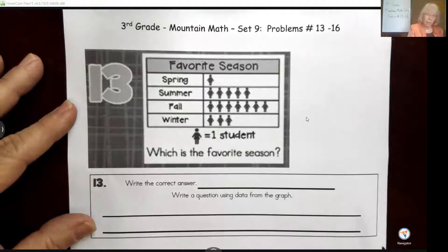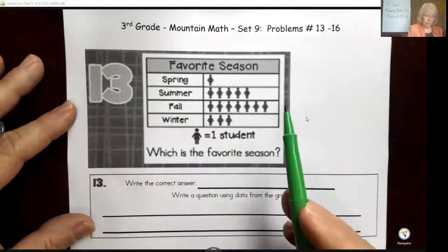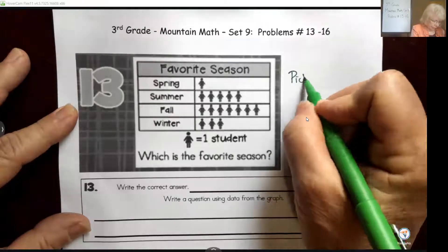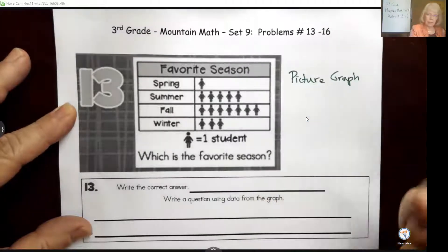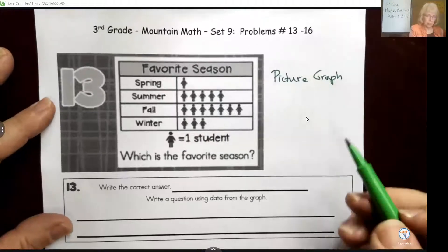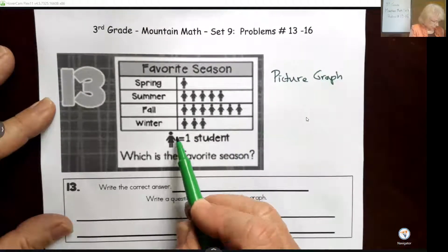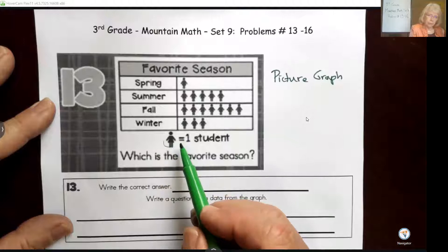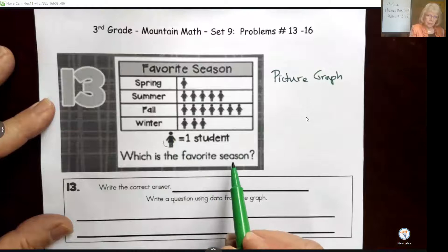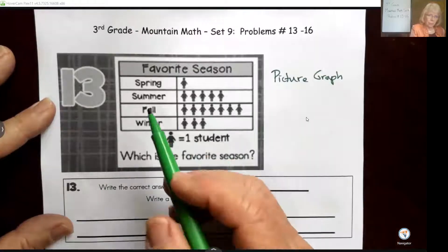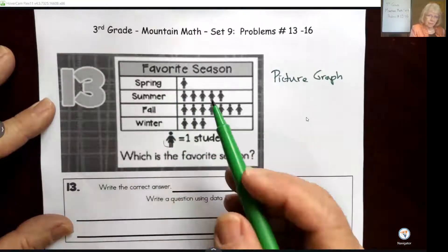This has a lot of data here. This is called a picture graph, and a picture graph tells us information by including pictures. In this case, the picture is a little person, which they say each picture is one student. The question is which is the favorite season, so they have our four seasons here.